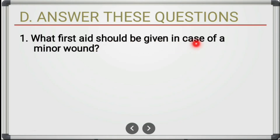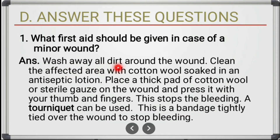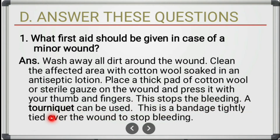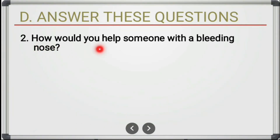Long answer: what first aid should be given in case of a minor wound? Wash away all dirt around the wound. Clean the affected area with cotton wool soaked in an antiseptic lotion. Place a thick pad of cotton wool or sterile gauze on the wound and press it with your thumb and fingers — this stops the bleeding. A tourniquet, which is a bandage tightly tied over the wound, can also be used to stop bleeding.